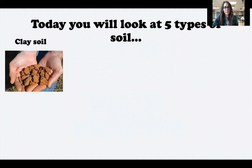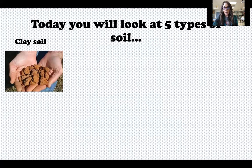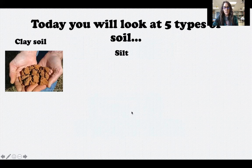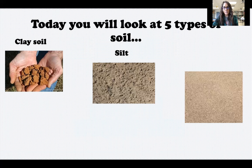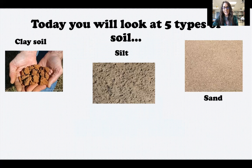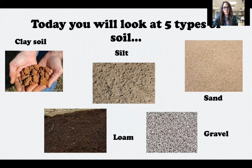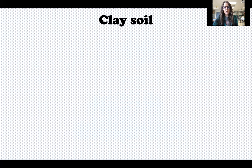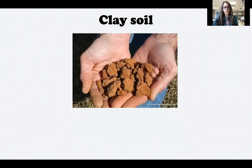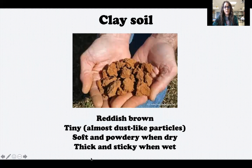We'll be doing an experiment with the same five types of soil to see which one does the best job of holding in water. One type of soil we're going to look at is called clay soil. We're also going to be looking at silt, sand, loam, and gravel. Let's talk about clay soil — here's a picture of clay soil. Hopefully you notice that clay soil is a reddish-brown color.